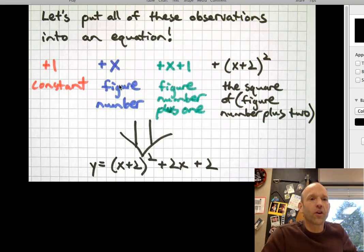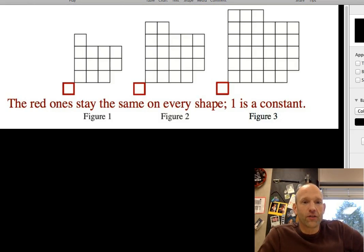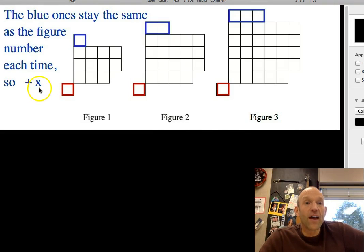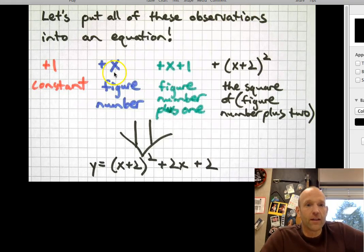Let's put all these observations into an equation. Think back to our constant. One is happening every time. So no matter what the equation is, there's going to be a positive one in it. There it is, in red. Next, we did the blue section. Remember, that was x. That's the figure number up here. So our equation is also going to have an x in it. There's my blue.